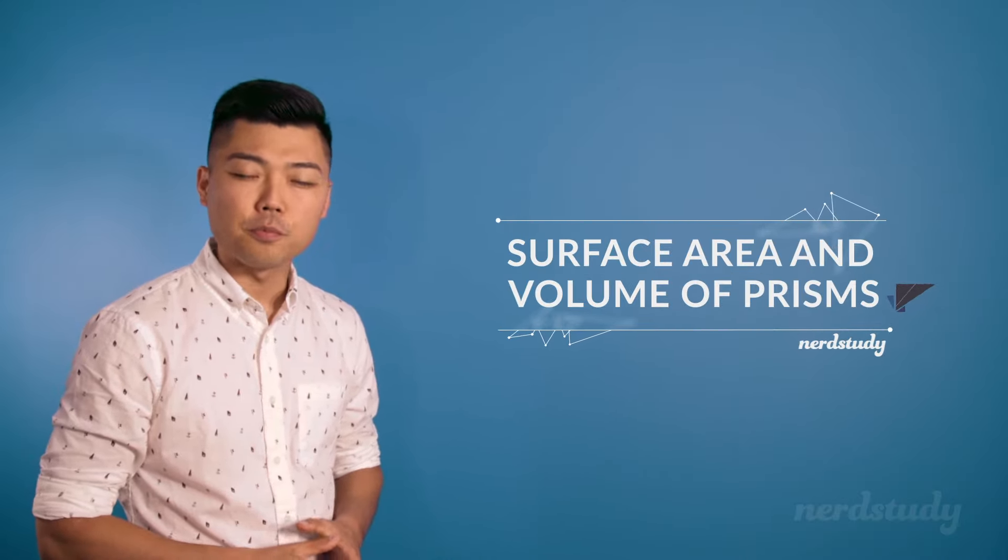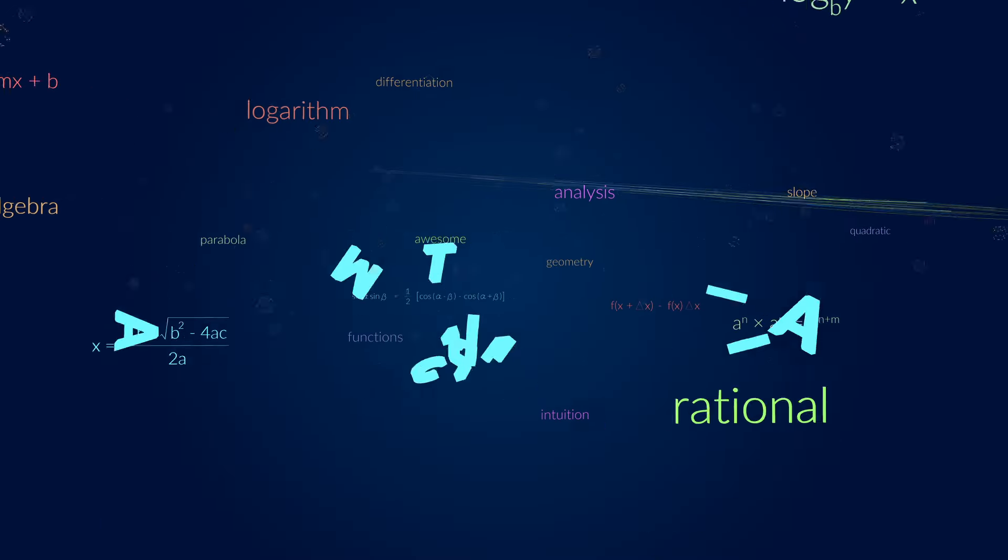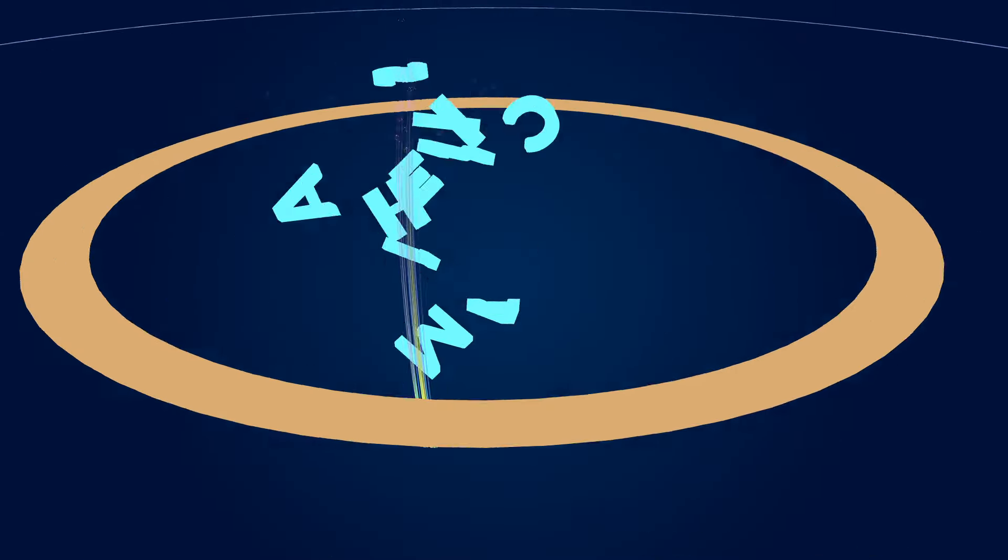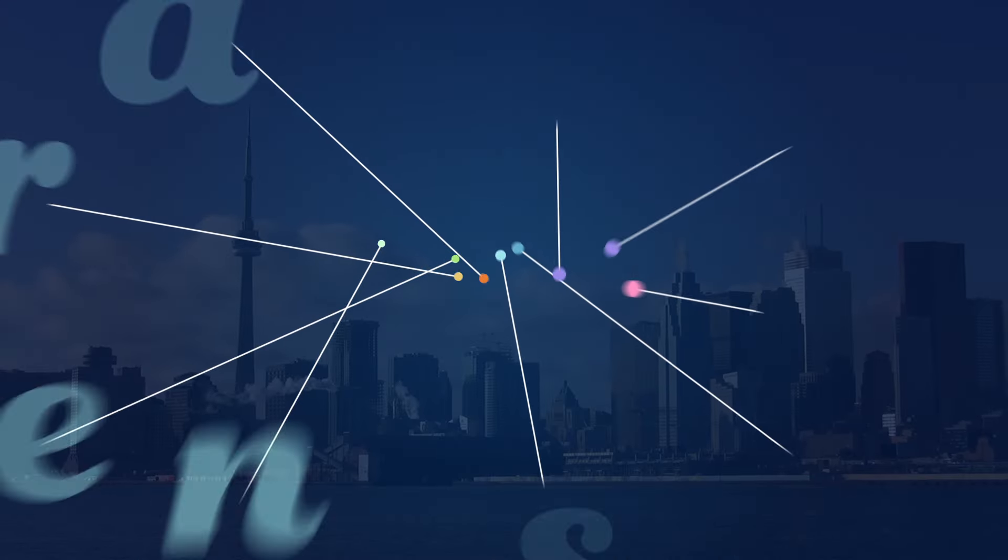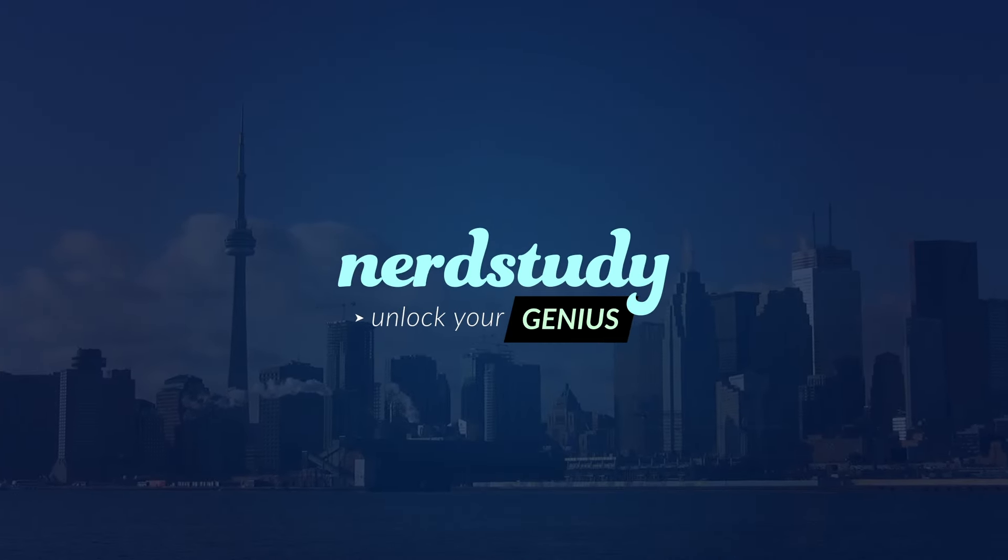Hey guys, today we're going to learn about the surface area and volume of prisms. First of all, let's think about a shape. For example, a square. Now this would be a 2D object.